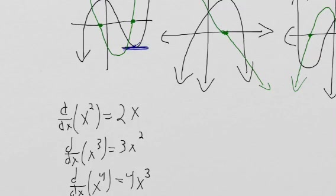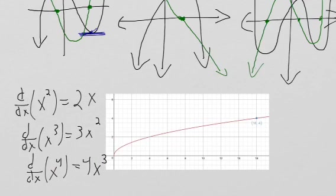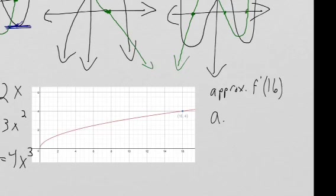Okay, so here's a graph. This looks like it might be a square root function, but that doesn't matter because what the question is going to ask is: which is the best approximation of f prime of 16 if this is f of x? And then it would say: A will say 4, B will say 0.1, C negative 4, D negative 0.1.